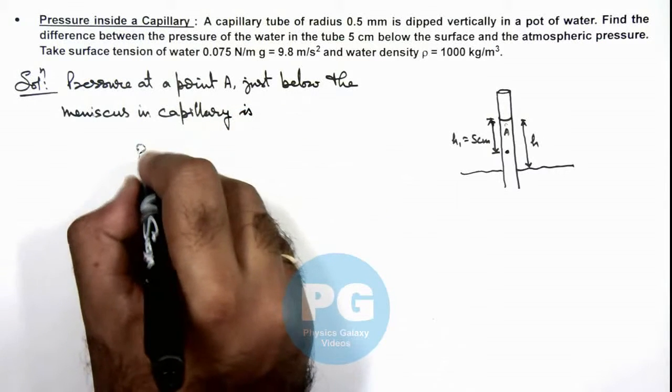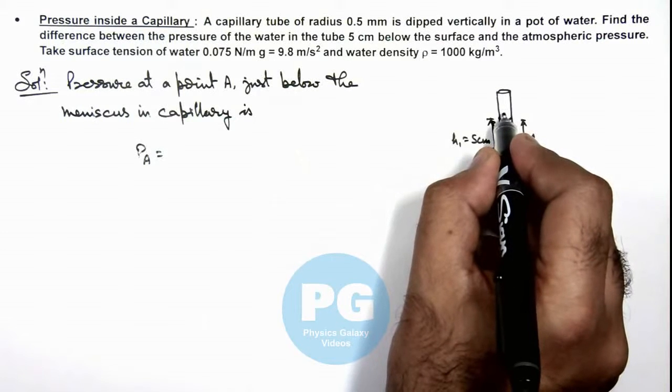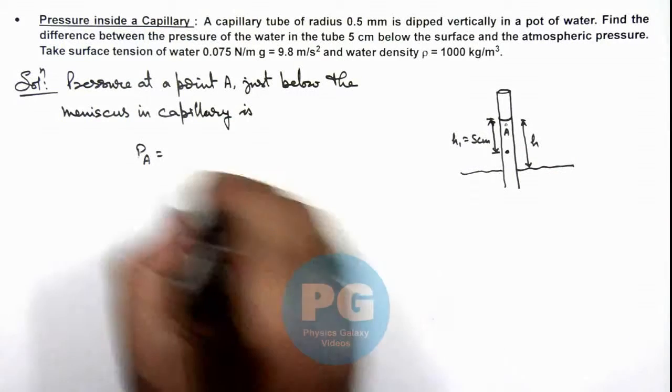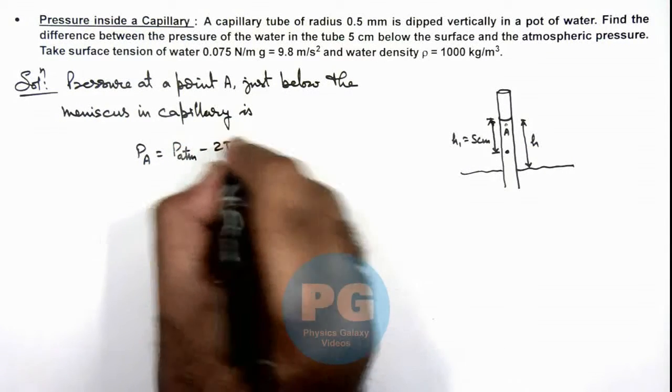We know pressure at point A we can write as the atmospheric pressure minus the excess pressure due to this curvature, so this we can write as P_atm - 2T/r, where r is the radius of curvature for the meniscus.